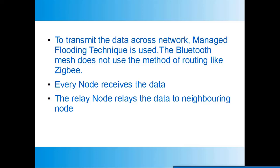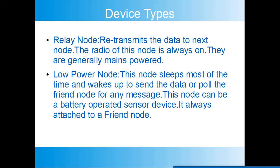The first device type supported by Bluetooth mesh is the relay node. This node retransmits data or messages to the next node. The radio of this node is always on, and these nodes are generally mains-powered. These nodes form the backbone of the network, and with these nodes the range of the network can be extended.